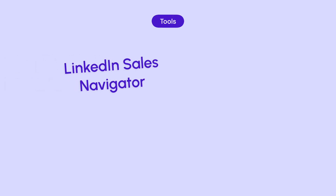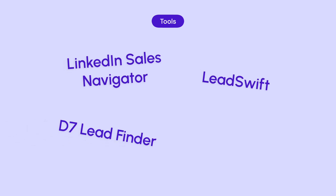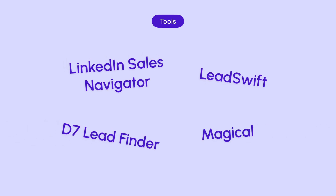The second way to get data is to leverage technology to help you scrape data for your cold emails. Some AI tools you can use are LinkedIn Sales Navigator, LeadSwift, D7 Lead Finder, and of course, Magical. Let's get into some details about them all.